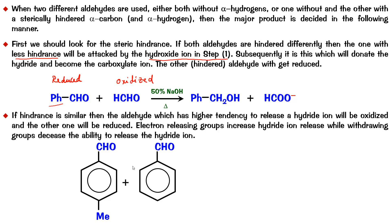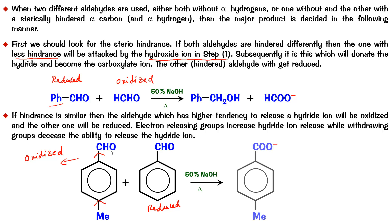Which of these two has a higher tendency to release the hydride? Obviously, the one in which electrons are being released toward the hydride. Notice there is a methyl group on one ring — this releases electrons, which will eventually help in hydride removal. The hindrances are similar, so look for the one which has electron-releasing groups. More releasing groups will release the hydride more readily; therefore, the one that can release the hydride will get oxidized. The product is the para-methylbenzoate ion, and the other aldehyde becomes the alcohol. That is how you decide in the case of a cross-Cannizzaro.